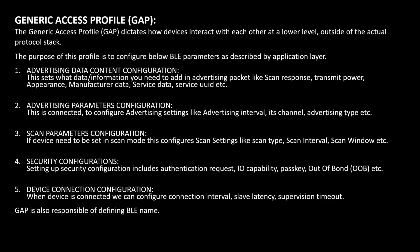Third is scan parameter configuration — if you want to set your BLE device as a scanner, you can configure what the scan type will be and for how long the scan interval should run. Next is security configuration, which includes authentication request, I/O capability, passkey, and out-of-band settings.